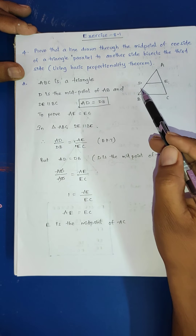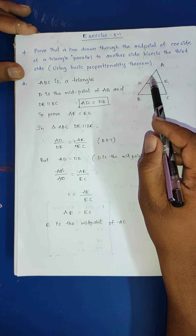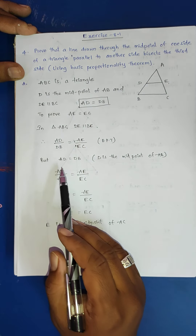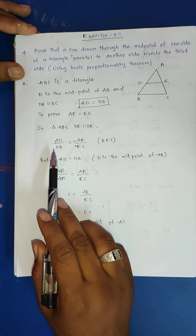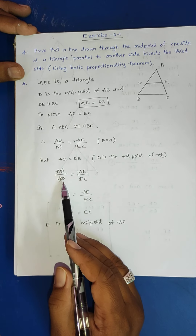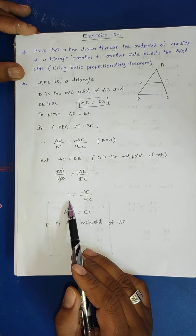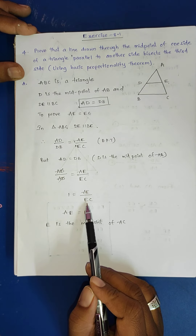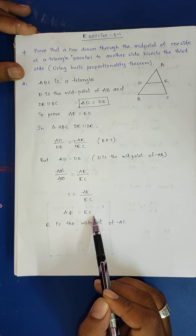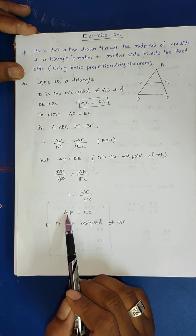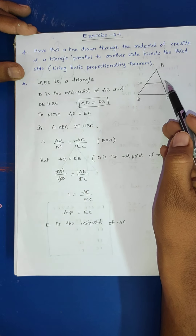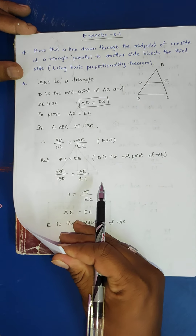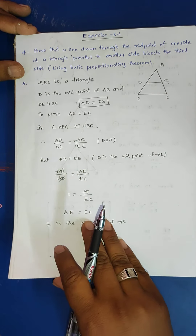Since AD equals DB, AD by DB equals 1. So AE by EC equals 1, which means AE equals EC. Sending EC to the other side: AE equals EC. Since these two are equal, we confirm that E is the midpoint of AC. Fourth problem also completed.